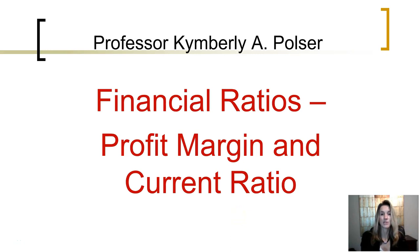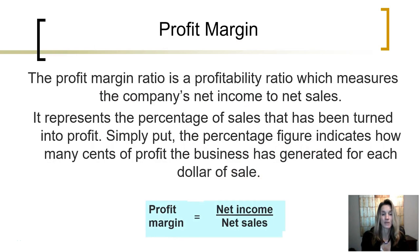In this segment, we are going to look at two more financial ratios, the profit margin and the current ratio. The profit margin is a profitability ratio which measures the company's net income to its net sales, and it represents the percentage of sales that has been turned into profit.